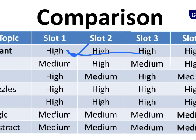Moving to the RC section — Slot 1 and Slot 3's RC level was comparatively a little easier. Morning slot candidates had a slight advantage because the length of the RC passages and the type of questions were a bit lighter. There was only a small difference of 1-2 marks between slots, not a huge gap. Critical reasoning in the morning slot had slightly longer questions, while the evening slot had shorter question lengths.